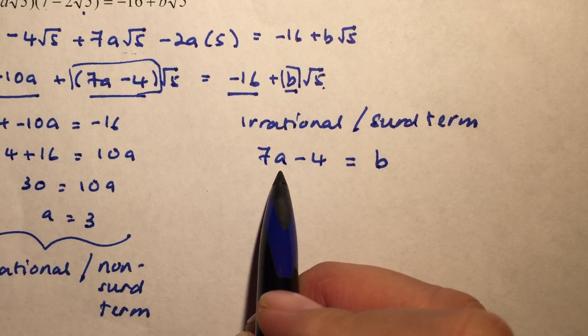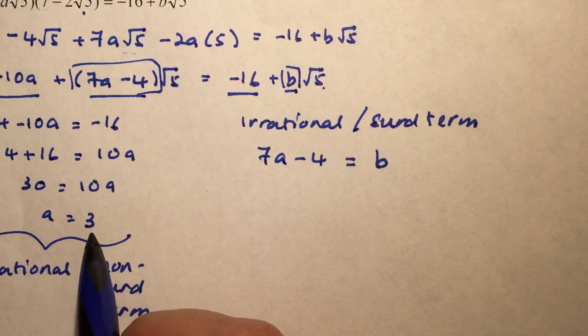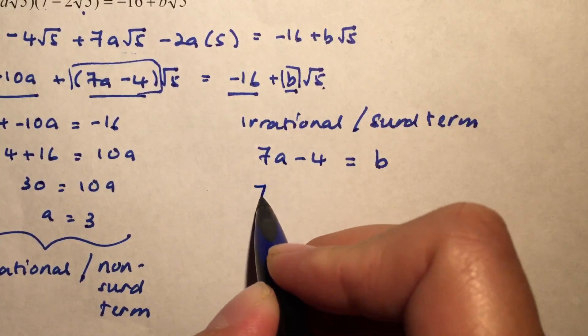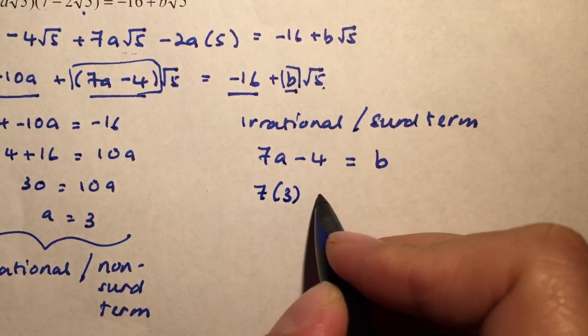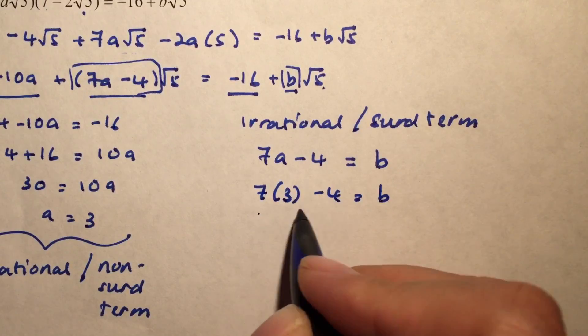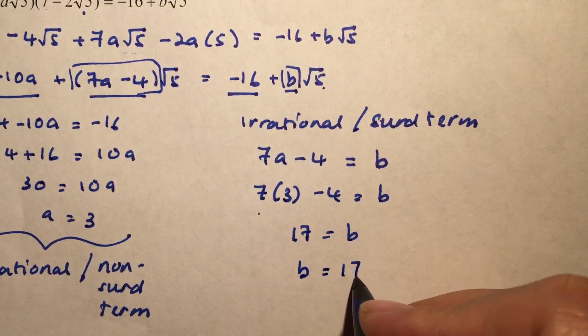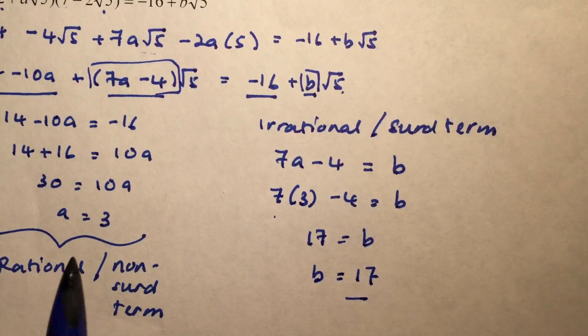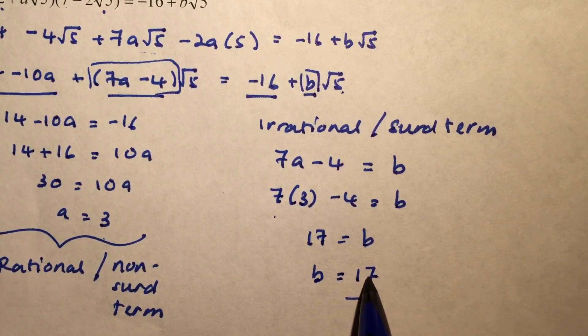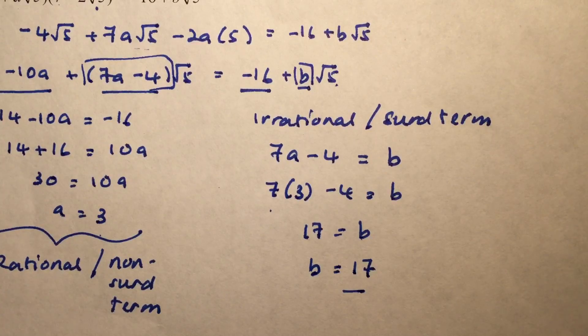And we actually found out A from the earlier part. We found that A is actually 3. So we can substitute A as 3, and we'll have 21 minus 4, which is 17. So in other words, my B is 17. And there you have it. We have A as 3, B as 17, and we have found the unknown values.